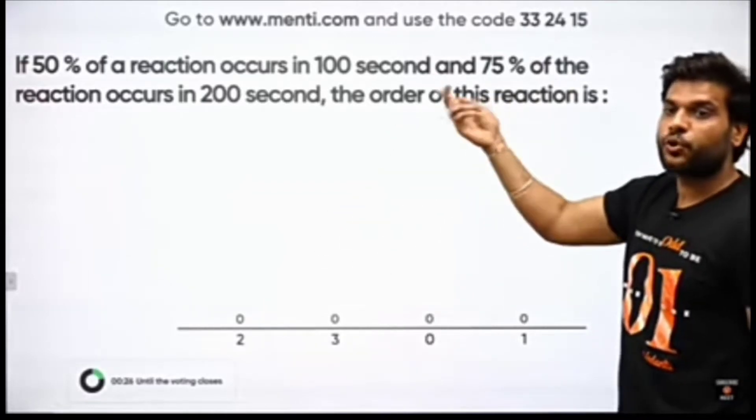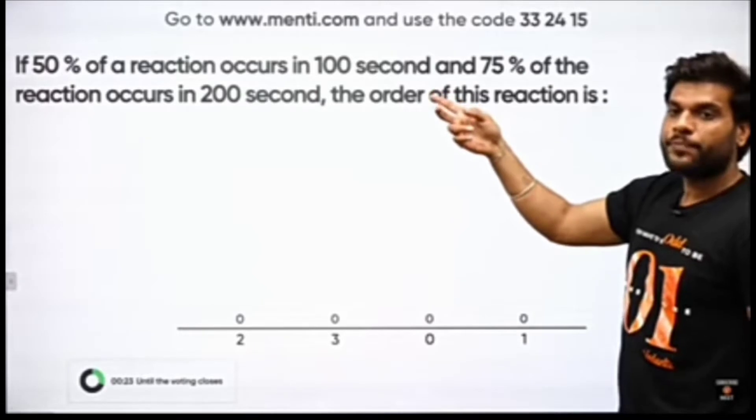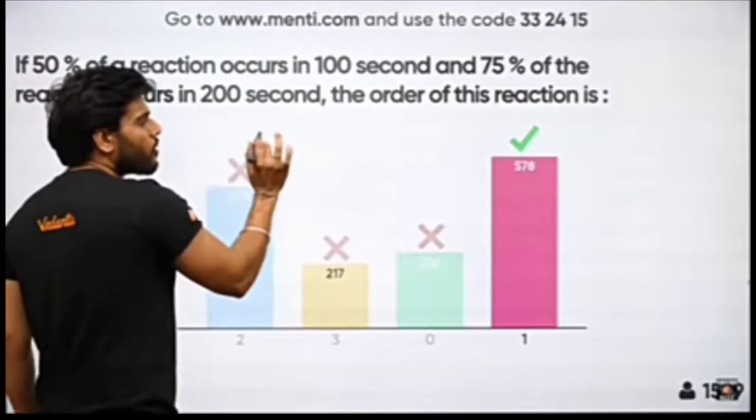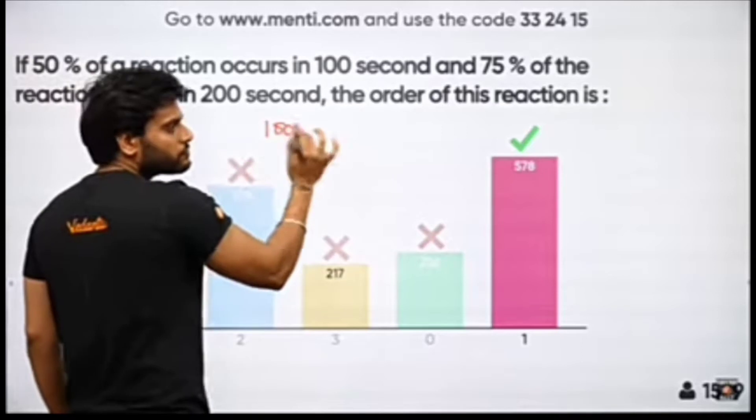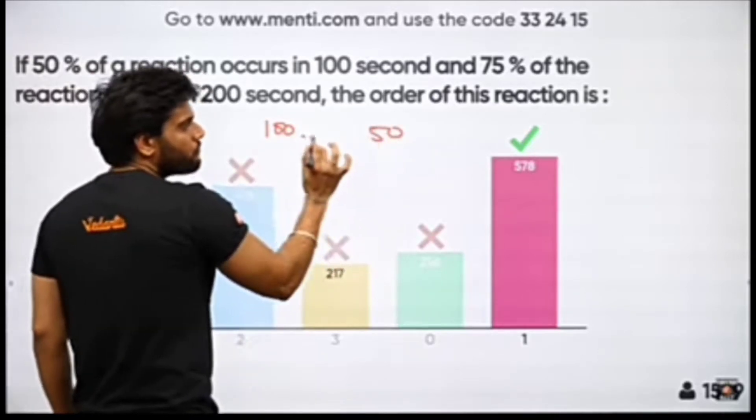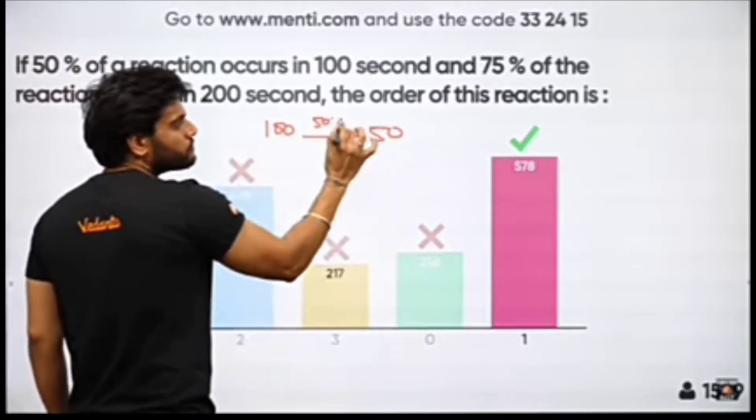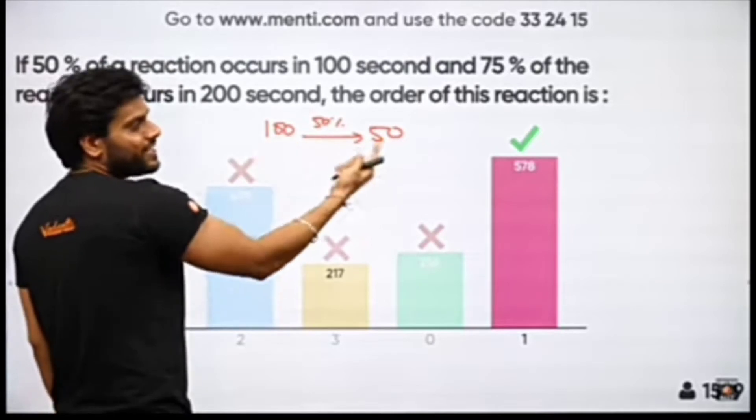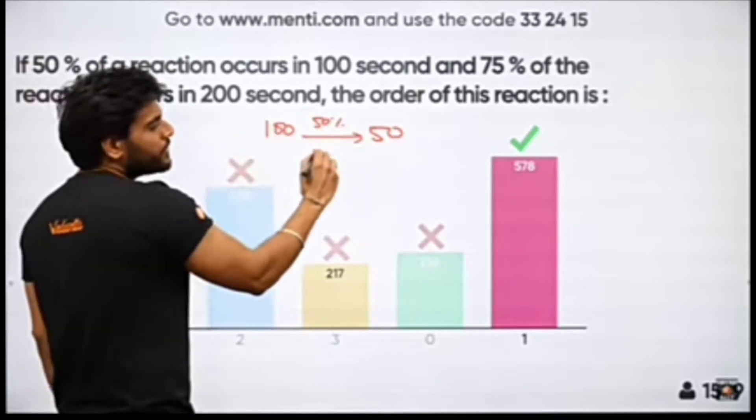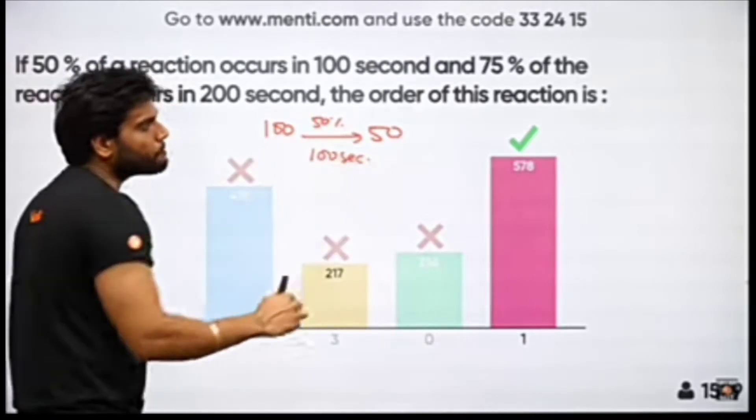50% is finished in 100 seconds, and then 75% is finished in 200 seconds. The reactant was 100, it was 50 from 100. How much was it? 50%. The initial concentration was higher, so the 50% is finished. How many seconds is finished? 100 seconds.